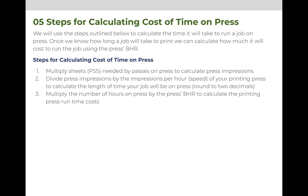Now that we have a basic understanding of what a press impression is, we can use that to calculate the time on press. The steps we need to follow are: one, multiply the number of sheets needed times the number of passes each sheet needs to go through the press — the answer will ever only be one or two, it either prints on the front, or it prints on the front and the back. Once we calculate the total number of impressions, we'll divide that by the speed of the press, or the impressions per hour of the press, and this will give us the time on press in hours. And last, once we know the total number of hours on press, we can multiply that times the BHR to calculate how much it will cost for that time.